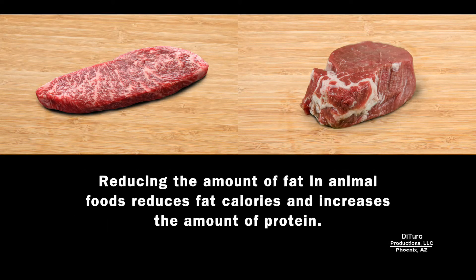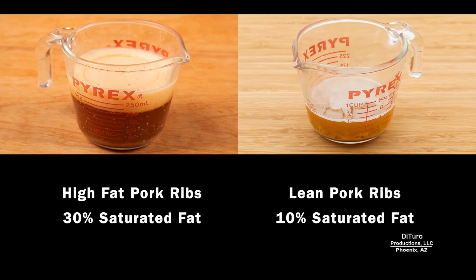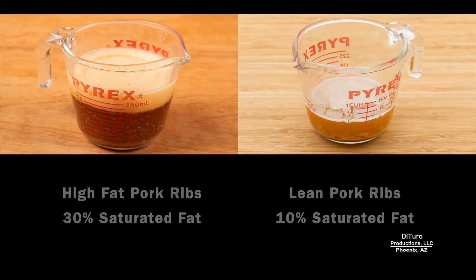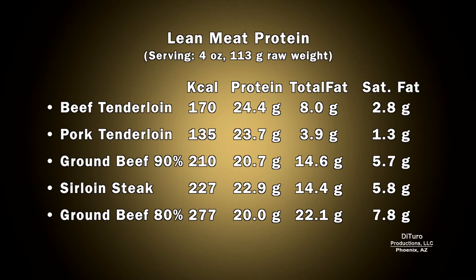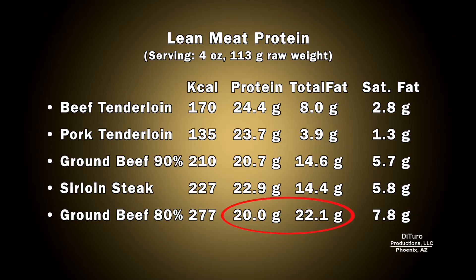Reducing the amount of fat in animal foods reduces fat calories and increases the amount of protein. As you can see in these photos, the lean protein ribs has less fat and less saturated fat. When it comes to lean meat protein, lean pork can provide almost as much protein and less fat than lean beef tenderloin. As the amount of fat increases, the amount of protein decreases.